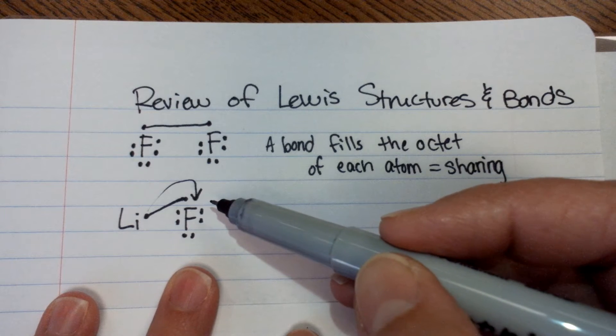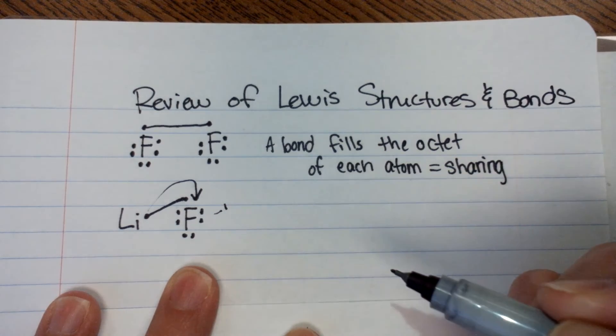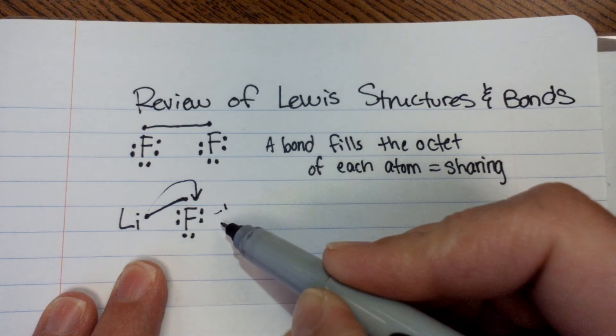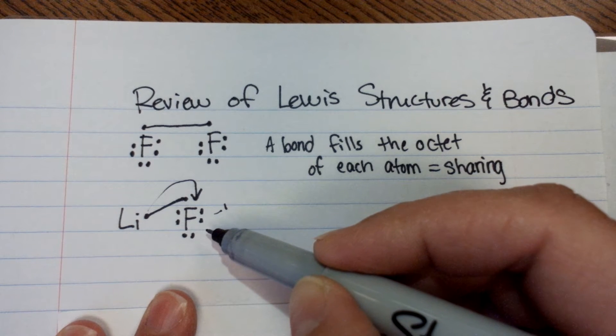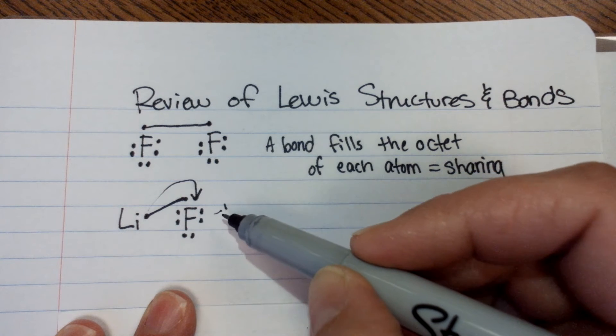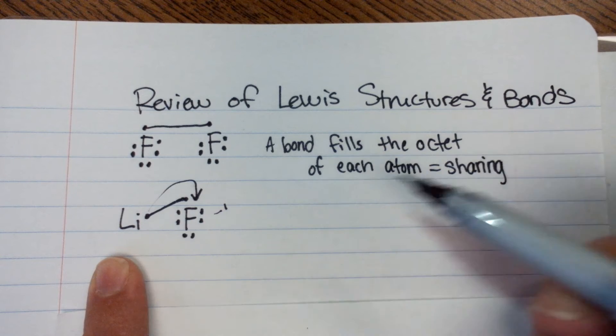You guys know people that do that a lot. So then fluorine gets a negative one charge because this extra electron is now at fluorine's house all the time. If fluorine gets that extra electron and has a negative charge, what charge does that make lithium have?